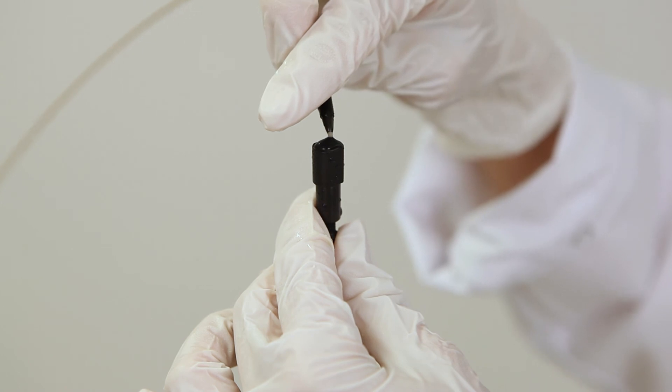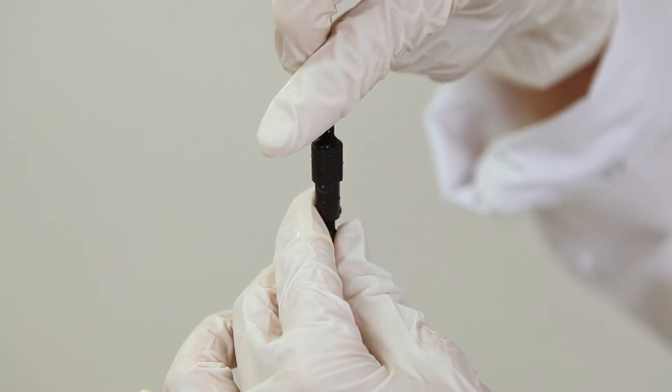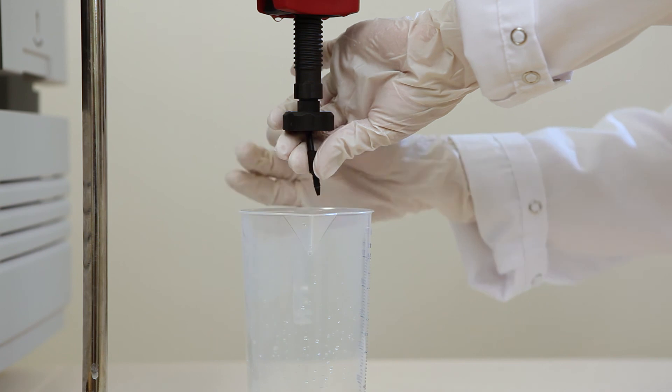Connect the column to the pump with a drop-to-drop connection and remove the bottom stop plug. Now start the pump.